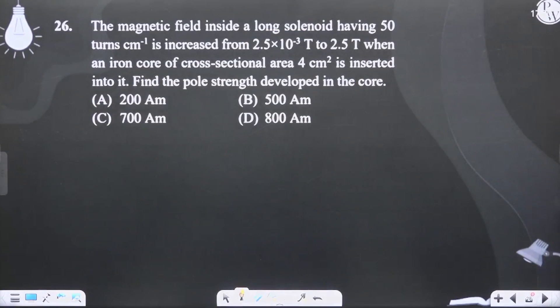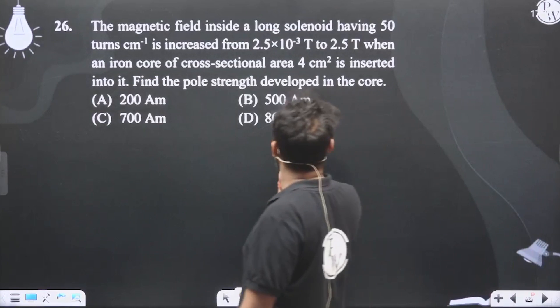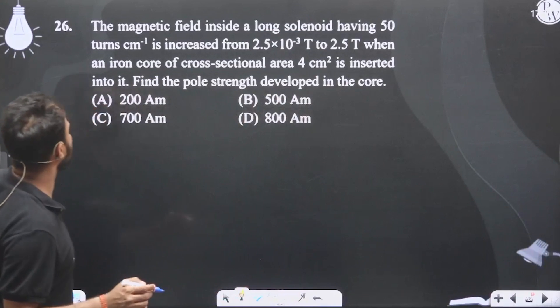Okay, let's see this question. The magnetic field inside a long solenoid having 50 turns per centimeter.